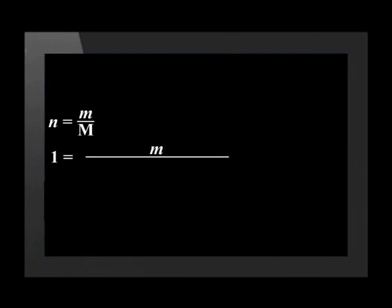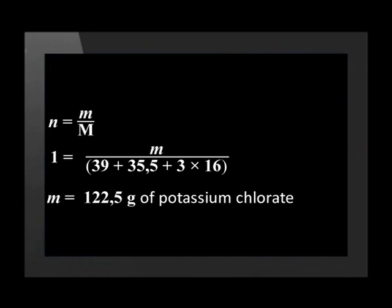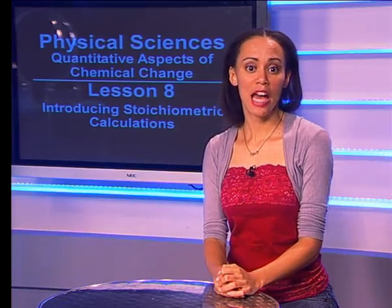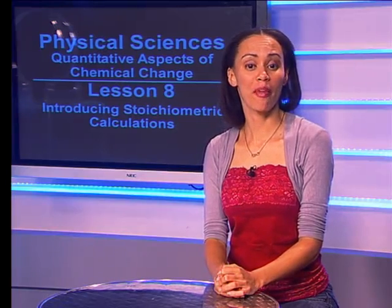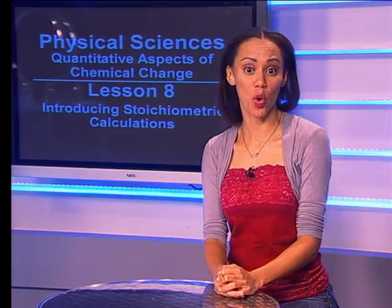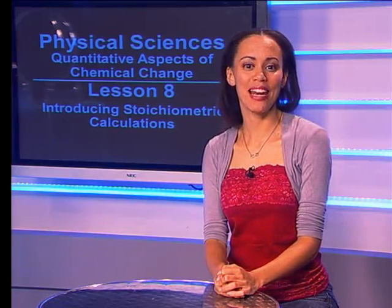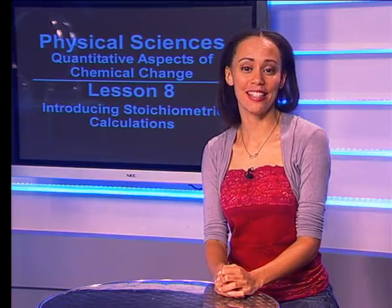Substituting these values, we get 1 equals M divided by 39 plus 35.5 plus 3 times 16. This gives us a final answer of 122.5 grams of potassium chlorate. We now know quantitatively that 122.5 grams of potassium chlorate is required to produce 11.2 cubic decimeters of oxygen gas at STP.